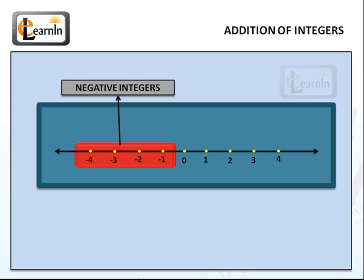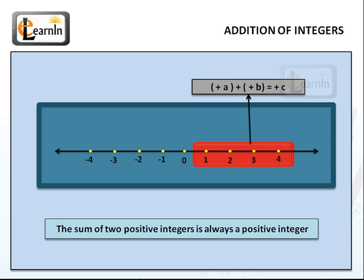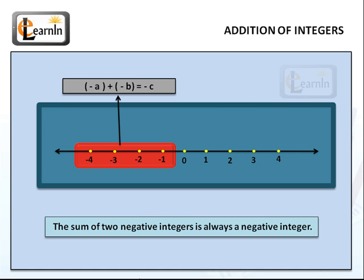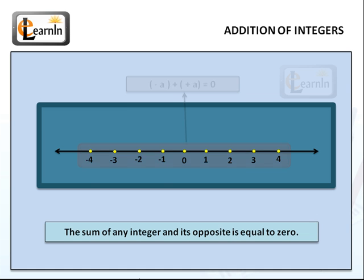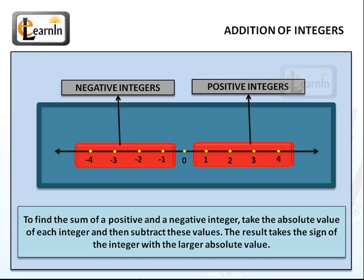When you're using the number line method, there are some important rules to remember. From 0, to the left are negative integers, and to the right are positive integers. The first rule is that the sum of two positive integers is always another positive integer. Similarly, the sum of two negative integers is always a negative integer. You should also remember that the sum of any integer and its opposite is equal to 0. To find the sum of a positive and a negative integer, one way is to take the absolute value of each integer, subtract these values, and the result takes the sign of the integer with the larger absolute value. So in this video, we learned a simple way to add integers using a number line.